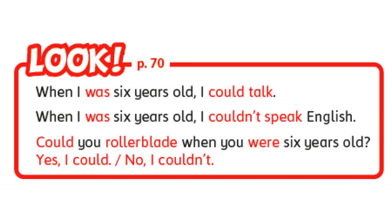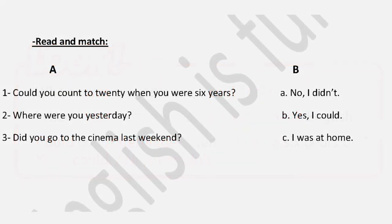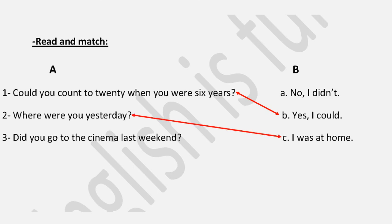Let's practice. Question: 'Could you ___ when you were six years old?' Answer: 'Yes, I could.' Or: 'No, I couldn't.' 'Where were you yesterday?' — 'I was at ___.' 'Did you go to ___ last Friday?'